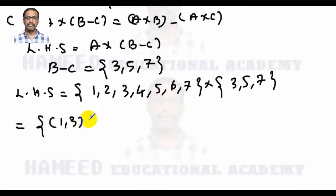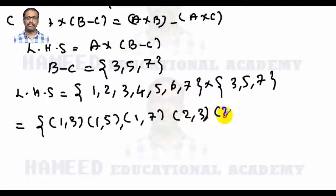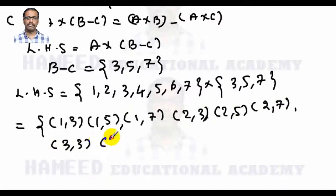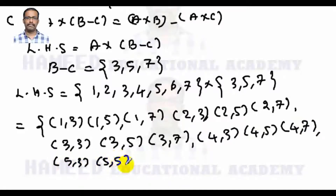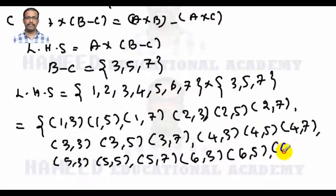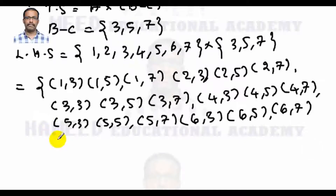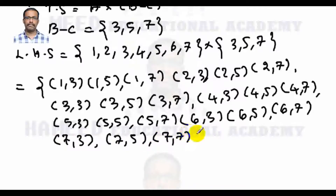Computing A × (B - C): the ordered pairs are (1,3),(1,5),(1,7), (2,3),(2,5),(2,7), (3,3),(3,5),(3,7), (4,3),(4,5),(4,7), (5,3),(5,5),(5,7), (6,3),(6,5),(6,7), (7,3),(7,5),(7,7). This is the left-hand side, equation 1.